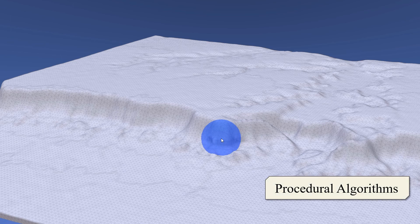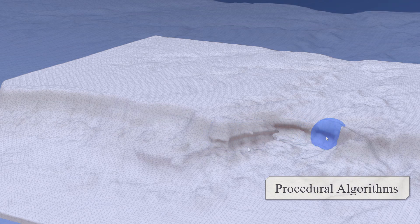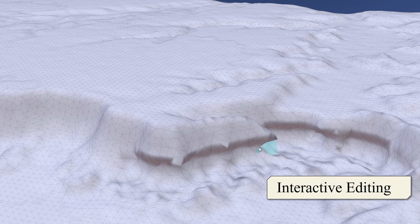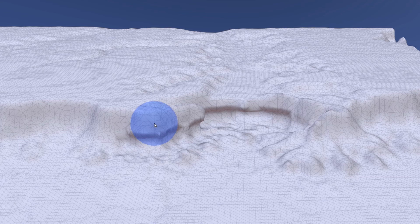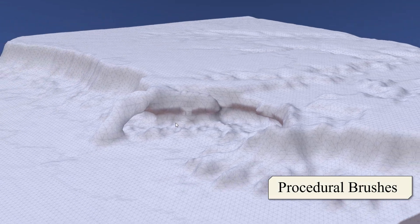In this example, the user first applied several steps of our coastal erosion algorithm to create overhangs and then adjusted details with a spherical brush. Towards the end, two arches were created procedurally with specific brushes.